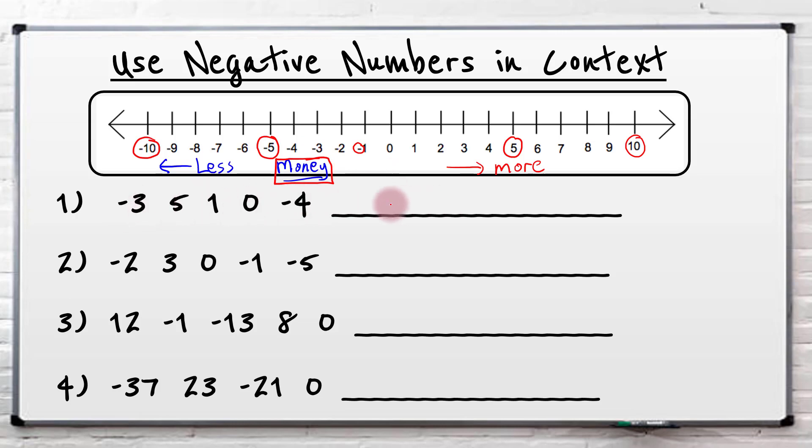So we've got to look at these and put them in order. So we're going to treat them like money. So I've got minus four pounds. Well, that's a bit rubbish. Minus three pounds, it's not just as bad. Five pounds, one pound, and zero pounds. So let's put them in order.